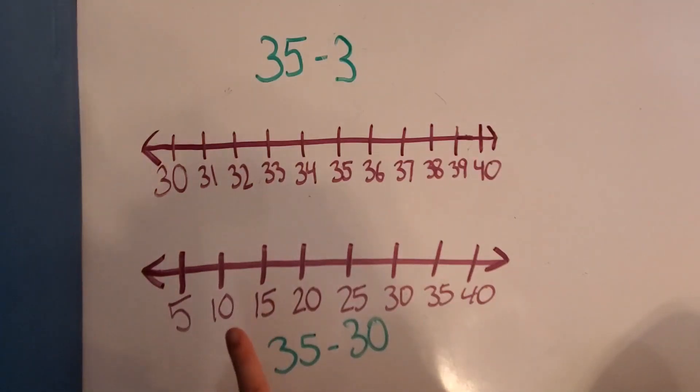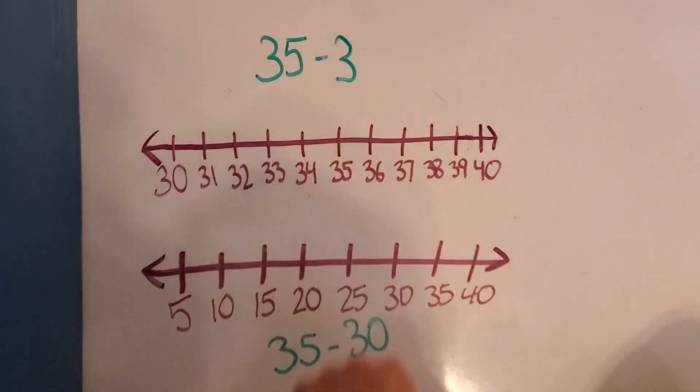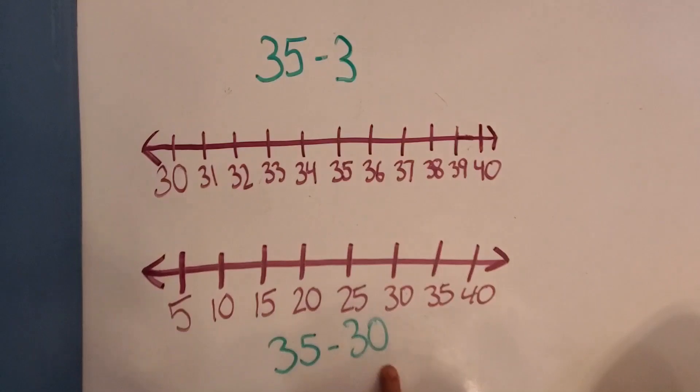So I want you to notice something about these two math problems. They both have the same whole. They both have 35 as the whole, but the parts that are taken away are different. So in this one we're taking away 3 and in this one we're taking away 30.